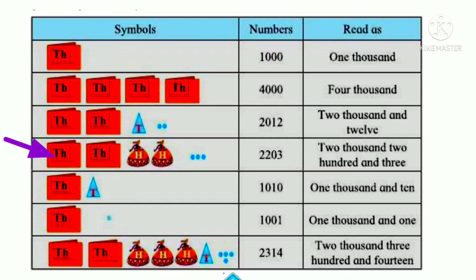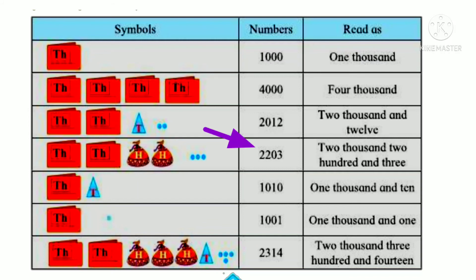Now see the next. In this symbol column, how many thousands are given? Two thousand. Hundreds are also given two times — two hundred. The tens place is not given. Only the units place is given — three units. How to write this number: two thousand, two hundred, and three — because tens place is not given, we read only the three — two thousand two hundred and three.